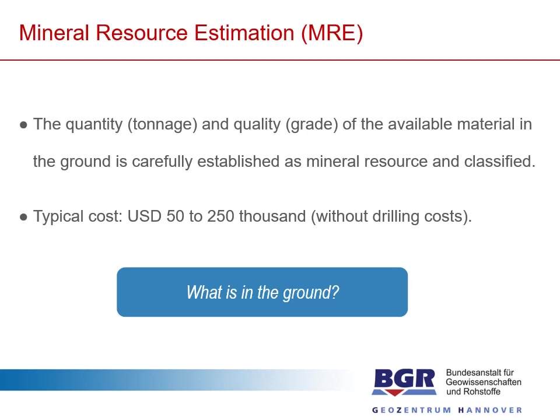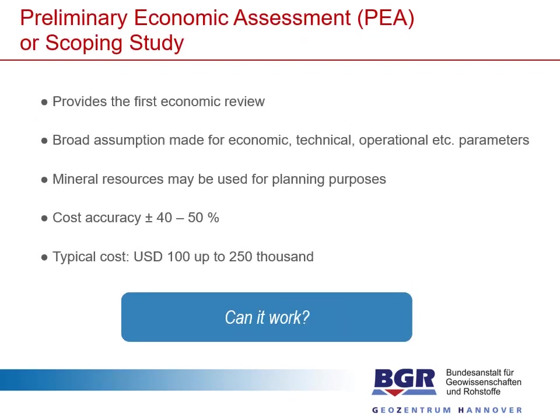During a mineral resource estimation, it's mostly about the tonnage and the grade — what is in the ground? The available material in the ground is carefully established as an inferred, indicated, or measured resource. Typical costs for a mineral resource estimation are around $50,000 to $250,000, not including the drilling costs. A little more detailed is the preliminary economic assessment or the scoping study, because it already includes first economic analysis — broad assumptions for the economic, technical, and operational parameters, with an accuracy of plus or minus 40 to 50 percent. Typical costs are in the range of $100,000 to $250,000.